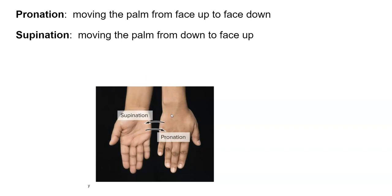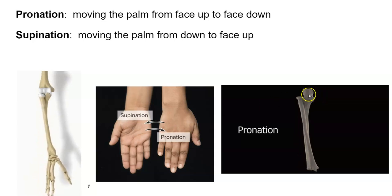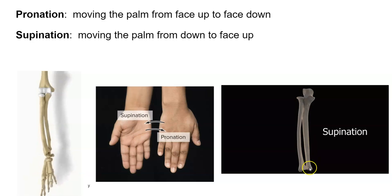Pronation. That's moving the palm from face up to face down. So starting in this position and flipping your palm down, that's called pronation. And then starting in this position and flipping your palm up, that's called supination. Here's another illustration of the same thing. I want you to notice how the ulna stays relatively motionless. So it's really the radius that's rotating around the ulna.